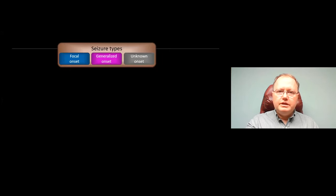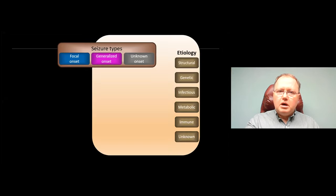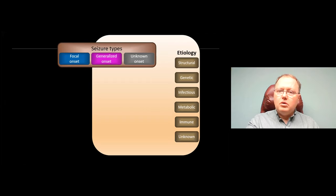When we think of seizure types, these are based upon EEG findings: focal onset, generalized onset, or unknown onset. What determines whether seizures are focal, generalized, or unknown is the underlying etiology — structural abnormalities like stroke or hypoxic encephalopathy, genetic disorders, meningitis or encephalitis, metabolic conditions like glucose transporter deficiency, autoimmune disease, or unknown cause.